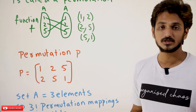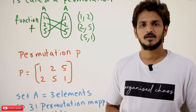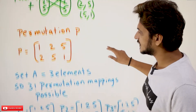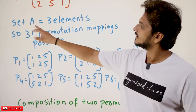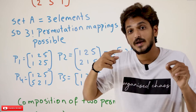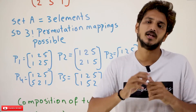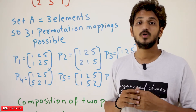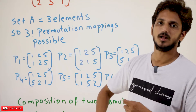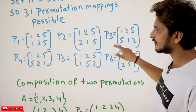So, you understand what permutation means. Now understand the next concept. Let's take set A containing three elements. How many different permutation functions are possible using these three elements? We can write 3 factorial permutation mappings possible. Yes, it is 3 factorial.